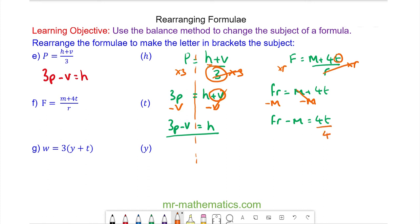We divide both sides by 4. These will cancel so we have fr minus m divided by 4 equals t.